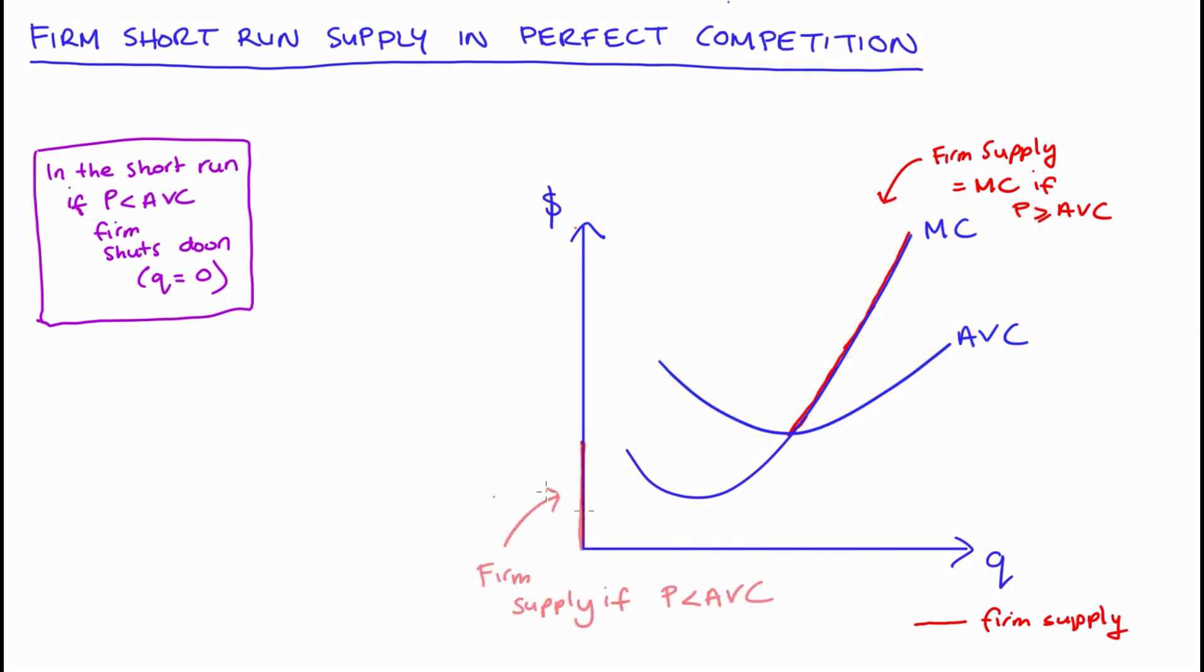If the price is below this range, then firm supply will be equal to zero. So our supply curve will be equal to the straight line at q equals zero there. So sometimes you see this line included in the description of the supply curve,